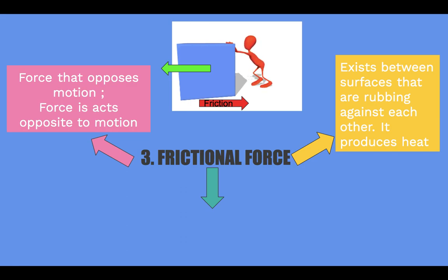For example, when we are cold, we rub our hands together for warmth. Friction between our palms produces heat.